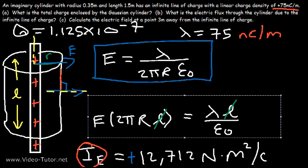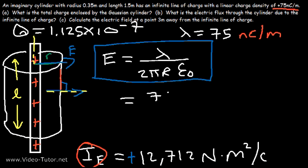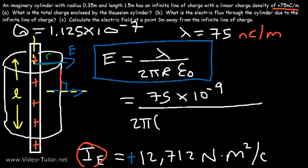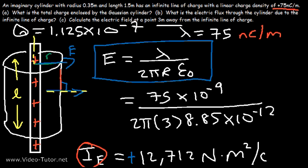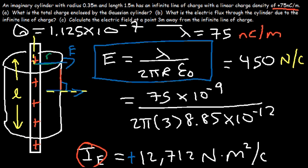So let's answer the last part of the problem. Lambda is 75 times 10 to the negative 9 coulombs per meter, and we want the electric field at a distance r equals 3 meters from the line of charge. Epsilon sub-nought is 8.85 times 10 to the minus 12. Plugging in the values, the result is approximately 450 newtons per coulomb. That is the electric field 3 meters away from the infinite line of charge.